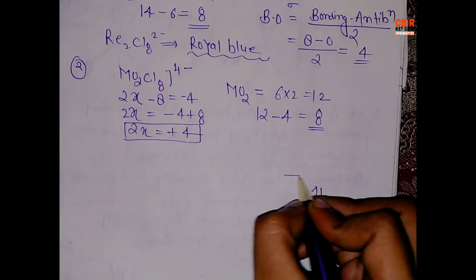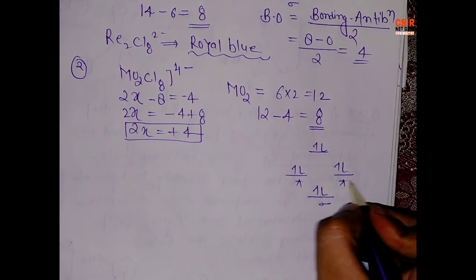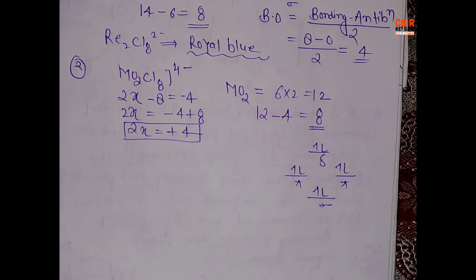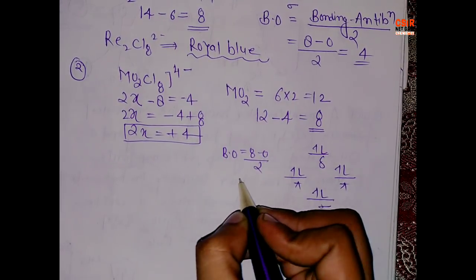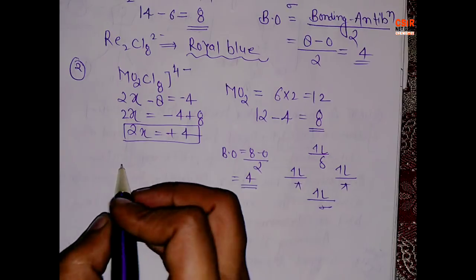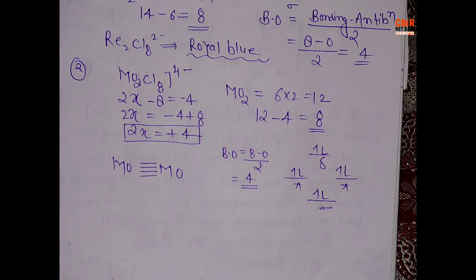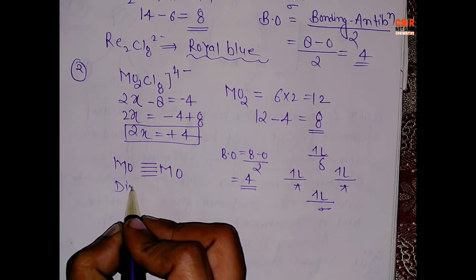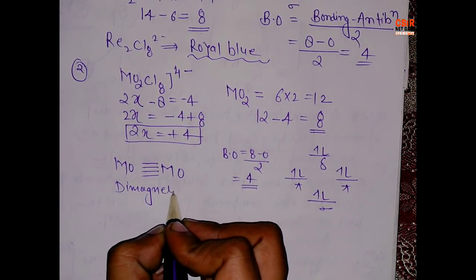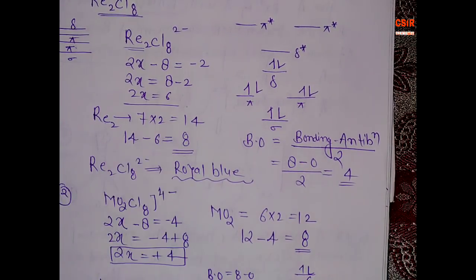Fill the 8 electrons: 1, 2, 3, 4, 5, 6, 7, 8 — sigma, pi, pi, and delta. Bond order = (8 − 0) / 2 = 4. It also has a delta bond between both molybdenum atoms. All electrons are paired, so this compound is diamagnetic. Same goes for the previous Re₂Cl₈²⁻ example — also diamagnetic.